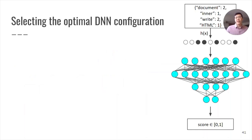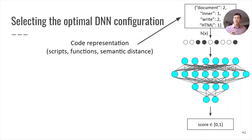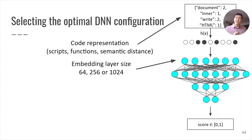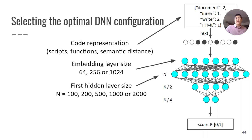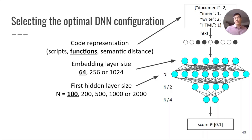In exploring the optimal configuration for our machine learning setup, we test with a variety of parameters. We test what the ideal representation of code is — whether entire scripts, functions, or a semantic distance metric made the most sense. We test with varying embedding layer sizes as used for the input to our model, and also various hidden layer sizes in our feedforward network. Ultimately, we chose functions as the ideal representation, an embedding layer size of 64, and a first hidden layer size of 100, which subsequently halves for three layers.